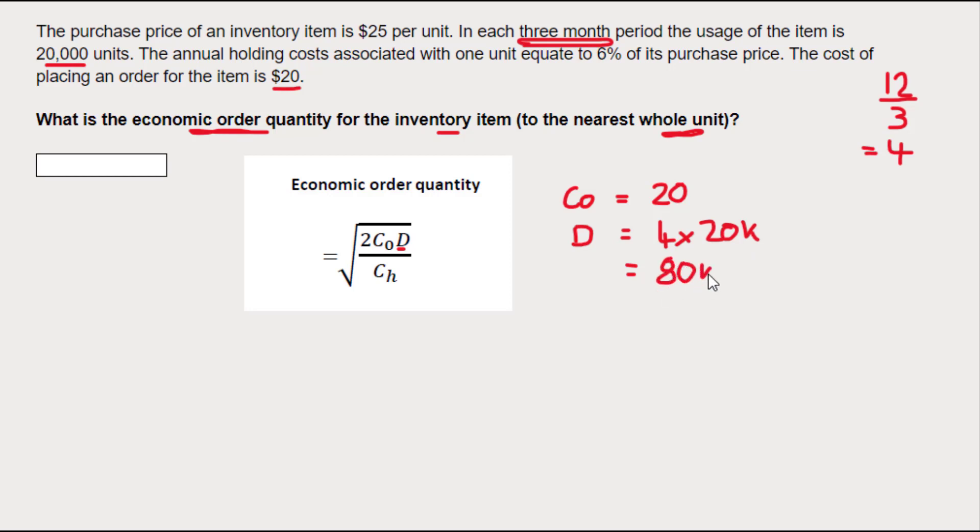And what about the bottom of the formula, Ch? Now that's the cost of holding one unit for one year. Am I told what Ch is in this question?